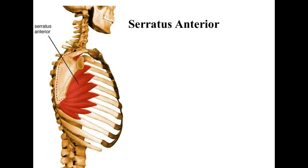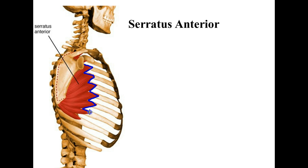There's the serratus anterior — this is another one of the muscles we had used as an example of how muscles work. What we have here for serratus anterior is the serrated edge, which is why it's called that — like a serrated knife. Sawtooth is what that means.